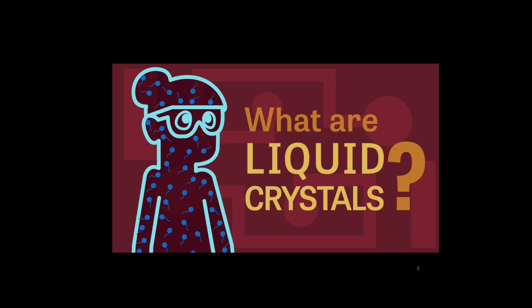As the terminology indicates, what are liquid crystals? This phase has the properties of both solid and liquid. Liquids are isotropic and have constant random motion, and crystalline solids, in contrast, are anisotropic.